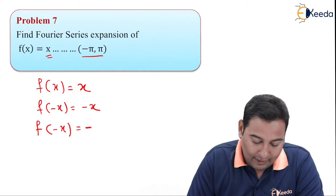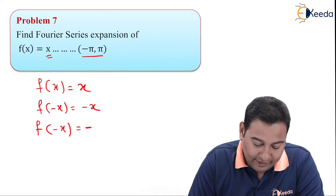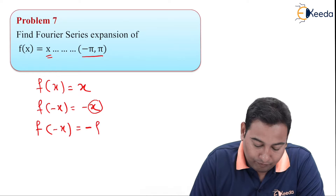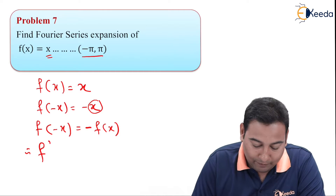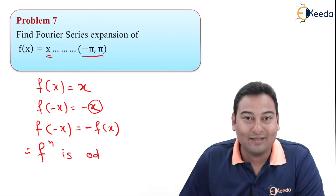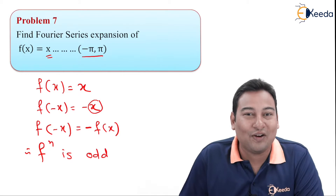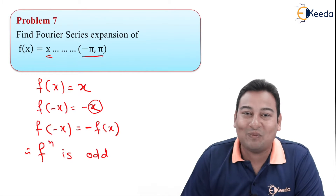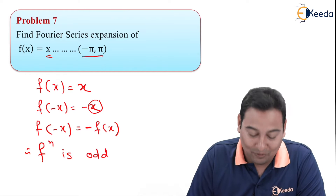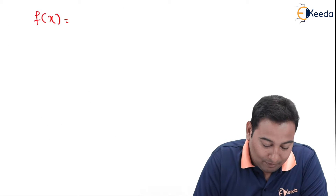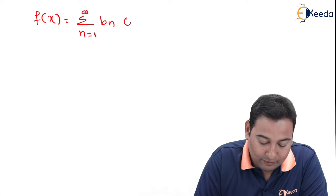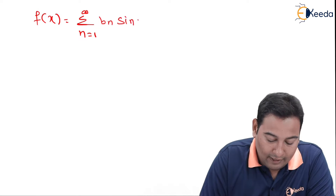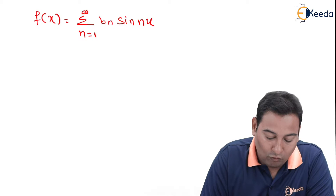This minus as it is, and this x is actually f of x only, and this is the condition. Therefore the function is odd. As soon as it is odd, be happy — because we just need to find only one term. What's that? b_n. Let's find it out. f of x is equal to summation of n equals 1 to infinity b_n sin(nx) — only one term.